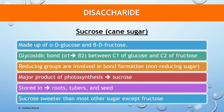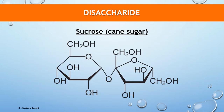Here the structure of sucrose is depicted. The first six-membered pyran ring is of alpha-D glucose and the second five-membered furan ring is of beta-D fructose. The first carbon atom of alpha-D glucose forms a bond with the second carbon atom of beta-D fructose, and hence the glycosidic linkage is named alpha-1-beta-2.